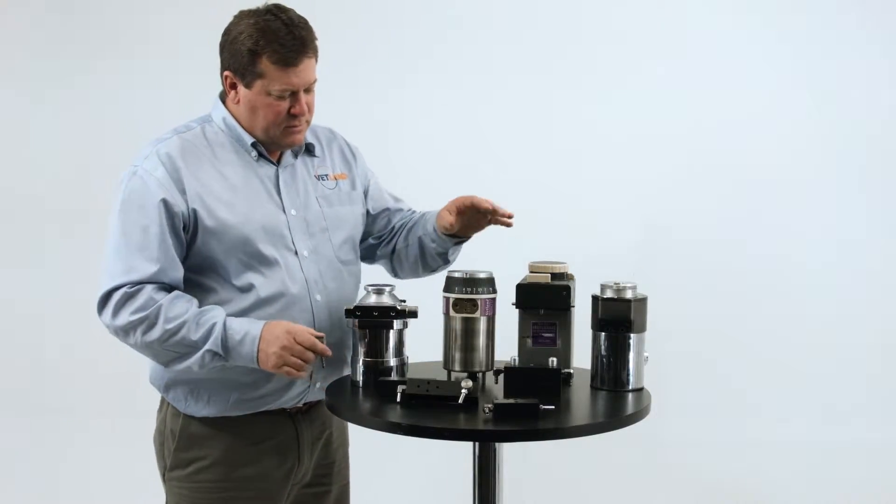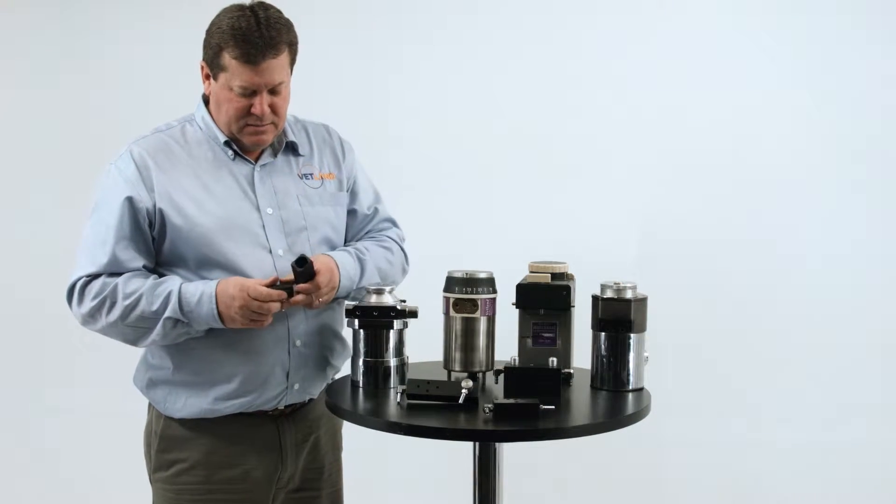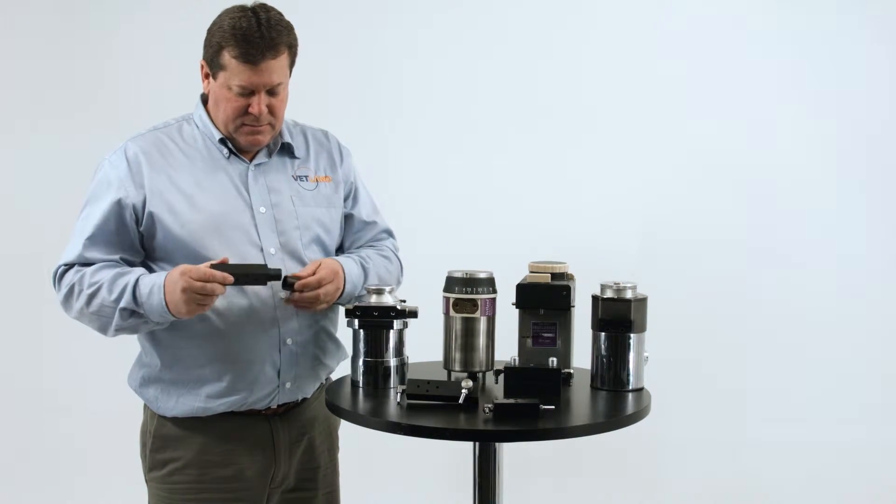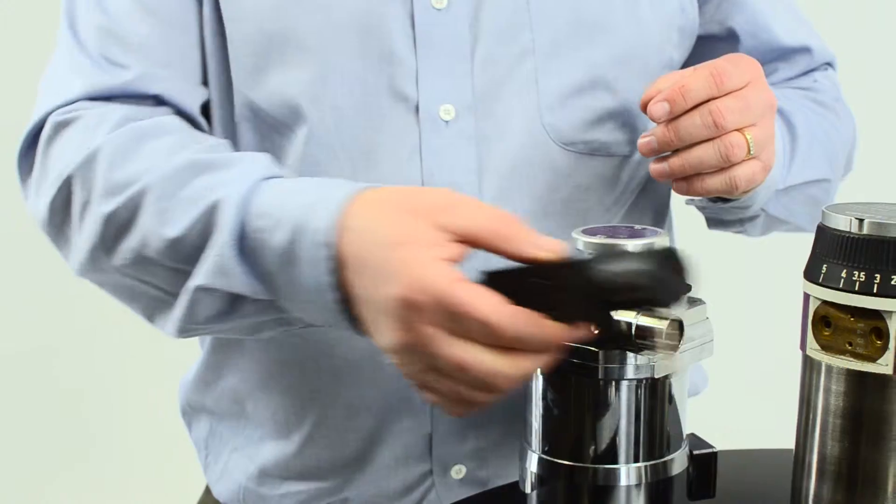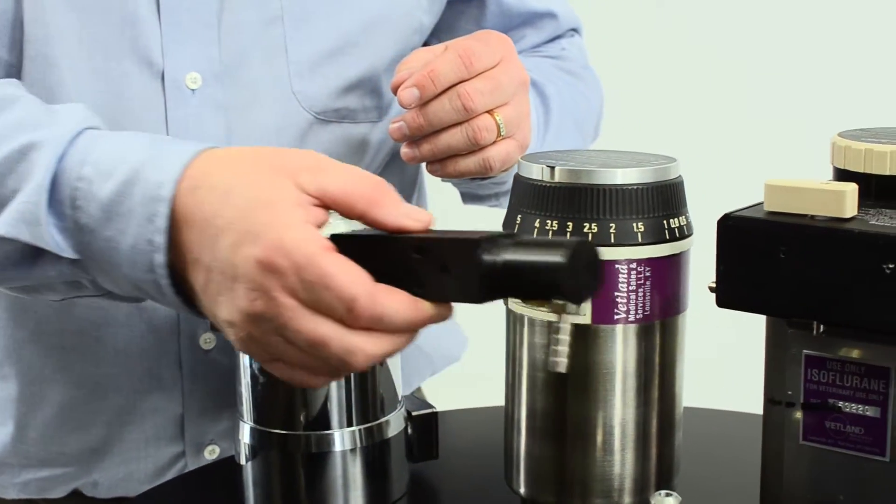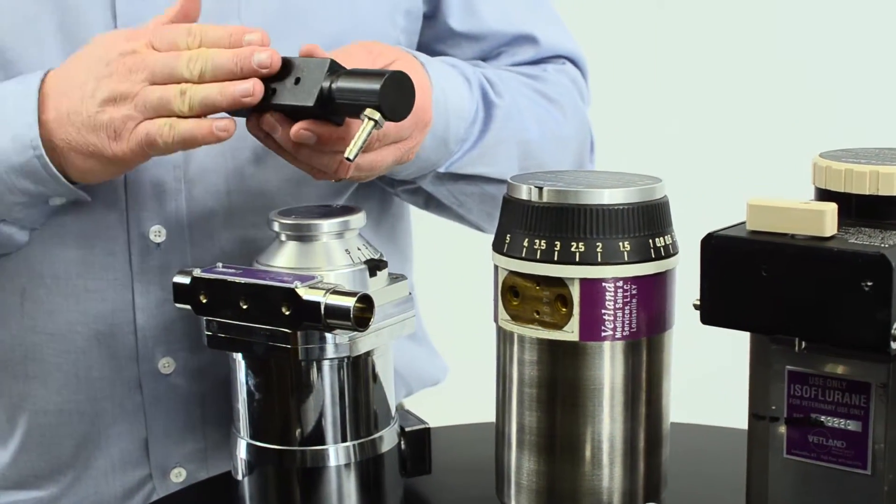The Draeger vaporizer, we can also have the same style manifold for it. It's a 23 millimeter slip fit that bolts on the back of the Draeger vaporizer. So that's one option.